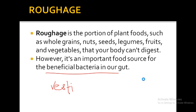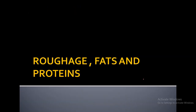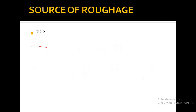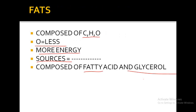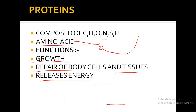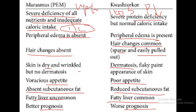Your homework is to write down the definition of roughage, the role of roughage, and sources of roughage. Then write the features of fats, sources of fats, and functions of fat. Then write the features of proteins, functions of proteins, and differentiate between marasmus and kwashiorkor.